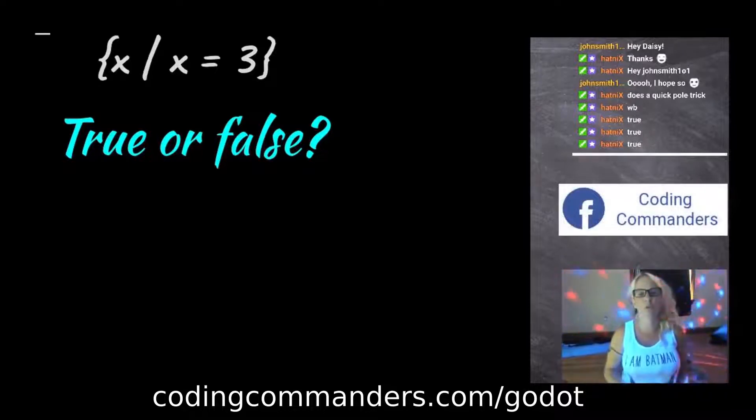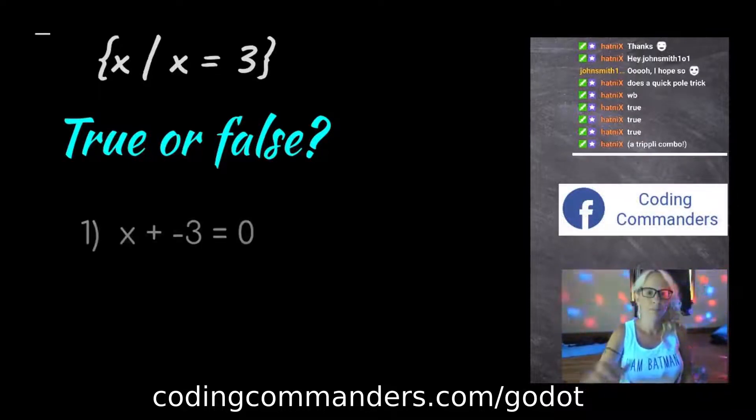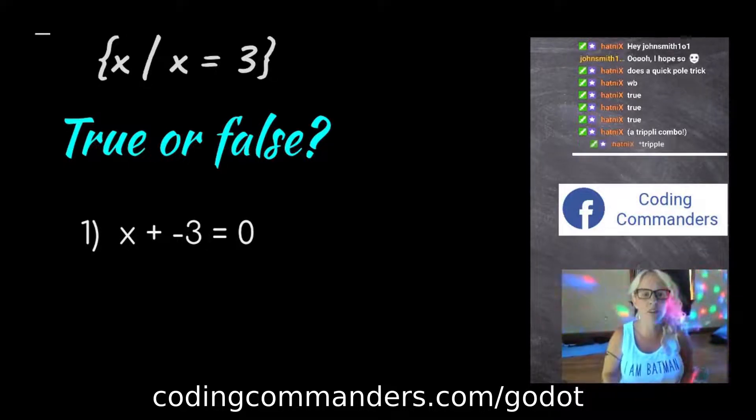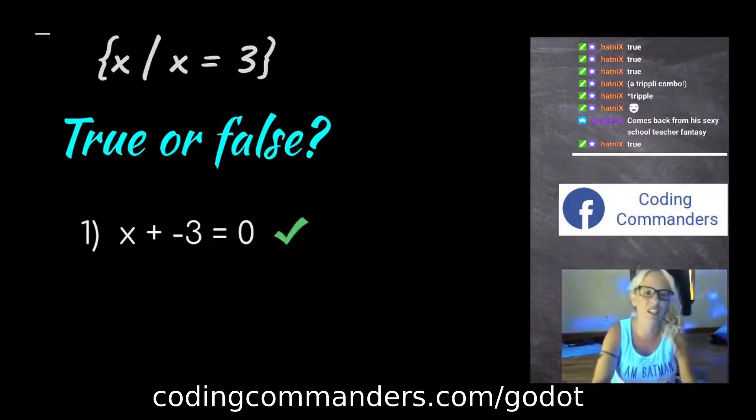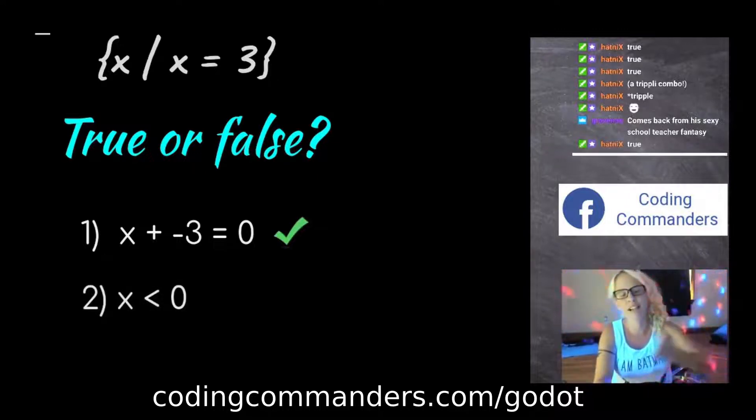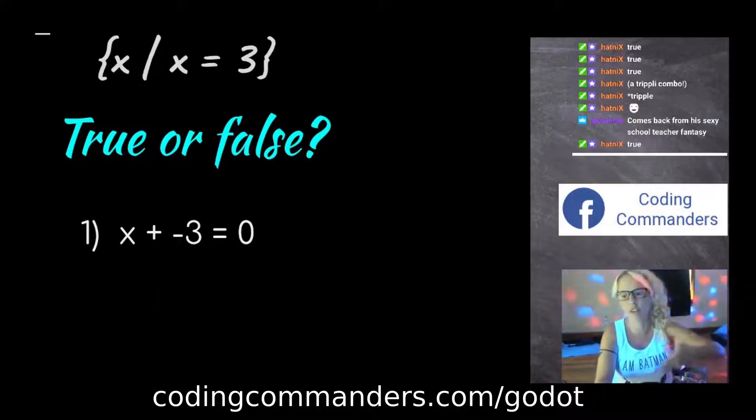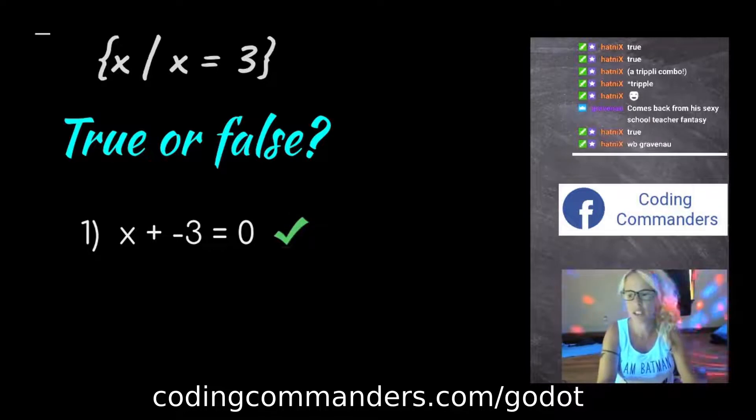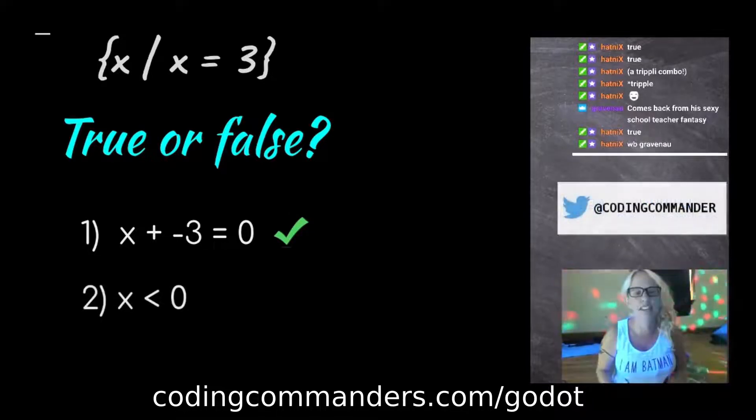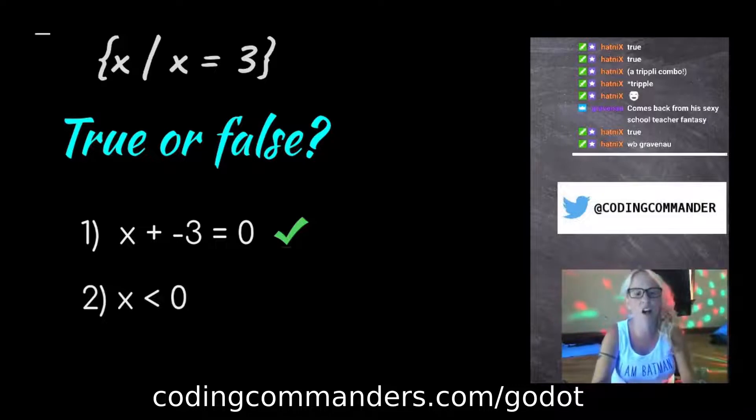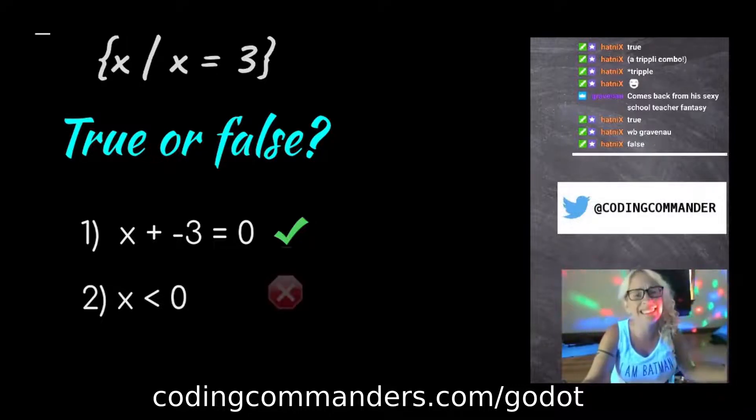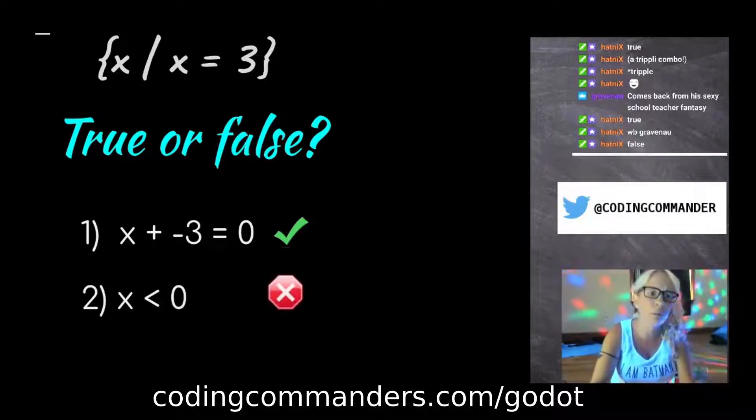X such that X equals 3. Is it true that X plus negative 3 equals 0? True. Very good. Because 3 plus negative 3 is the same as 3 minus 3, which will equal 0. Is it true that X is less than 0? Is this true or false? Sorry. Try again, mofo.